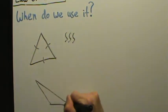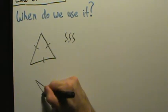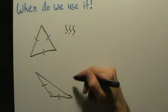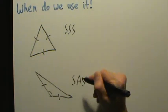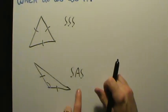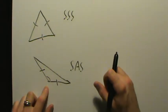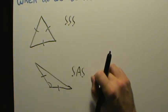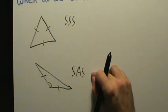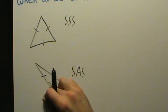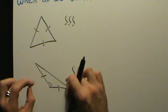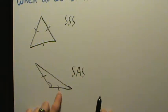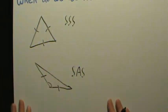Similarly, for an SAS type triangle — if you're given one side, an angle, and then another side — if you're given two sides and the angle between them, then you can use the law of cosines. But you cannot use the law of sines, because the law of sines requires that you know a side and the opposite angle. Here we don't know anything about opposites: we know this side but not the opposite angle, we know this side but not the opposite angle, we know this angle but not the opposite side. So the law of sines will not work, but the law of cosines will.